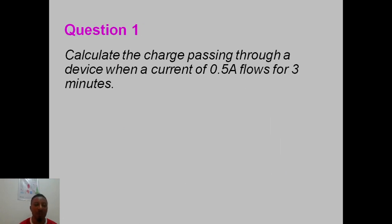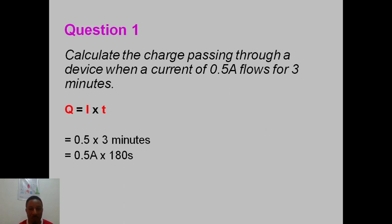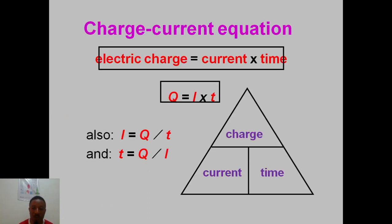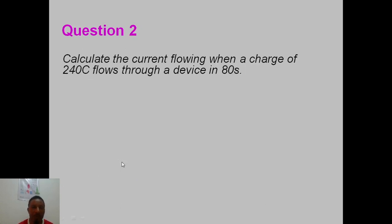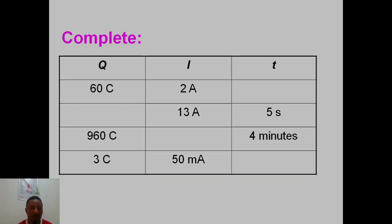Example 1: Calculate the charge passing through a device when a current of 0.5 A flows for 3 minutes. Convert 3 minutes to 180 seconds. Q = I × t = 0.5 × 180 = 90 coulombs. Example 2: Calculate the current when a charge of 240 coulombs flows through a device in 80 seconds. I = Q/t = 240 ÷ 80 = 3 A.